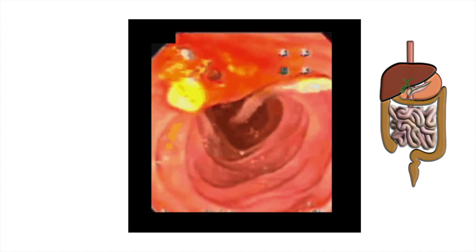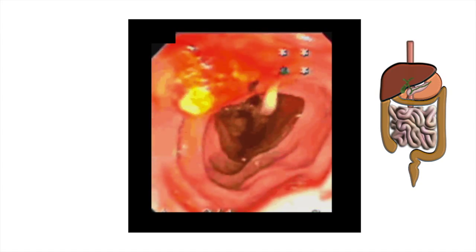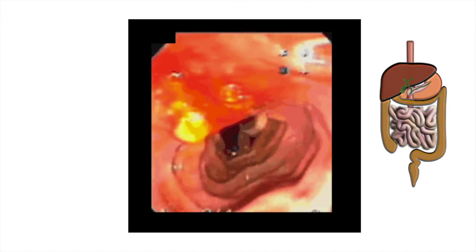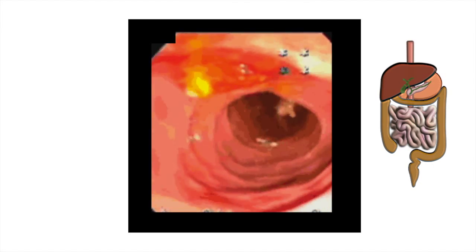When the ova are ingested by humans, the larvae migrate through the small intestinal wall, are carried through the blood or lymphatics to the lungs where they mature.